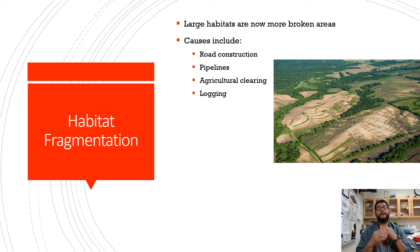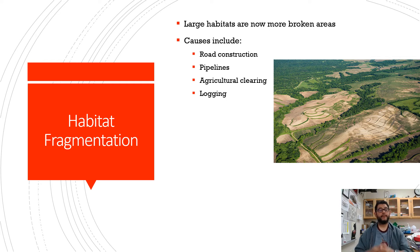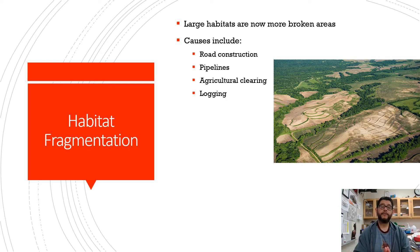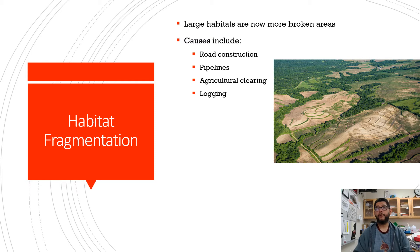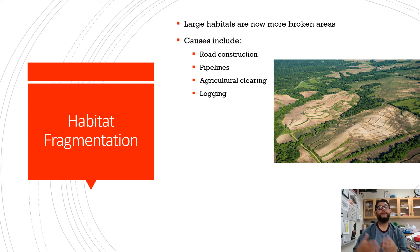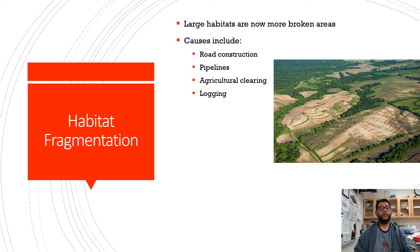A big problem we're seeing is habitat fragmentation — larger habitats that were once big continuous areas are broken apart. This can be because of road construction, pipelines, agriculture, logging, or even domestic use. Habitat fragmentation has actually been a previous free-response question several times. It's important to know not only the problem, but the solutions as well, which we'll go over in just a moment.